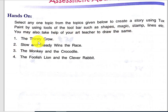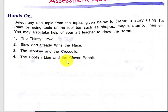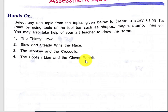You can draw stories such as: the thirsty crow, slow and steady wins the race, the monkey and the crocodile, or the foolish lion and the clever rabbit. So you have to practice Tux Paint using all the tools we studied in chapters 2 and 3, and try to create these stories. Thank you.